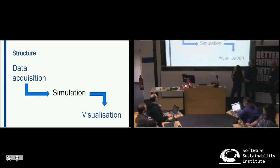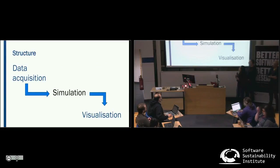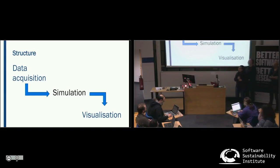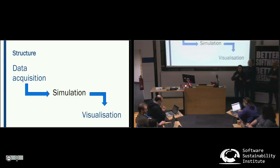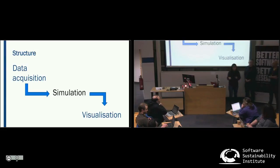Yesterday we spent the evening discussing our structure, and we divided our work into three parts. The main part is data acquisition — where I get the data from — and it's my input for a simulation that generates the output of refugees: where they go to the camps or throughout the country, how many people went to which city. Then I can take that output CSV file and visualize it.